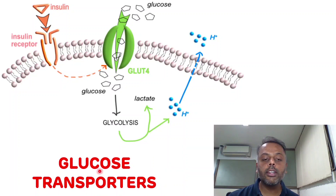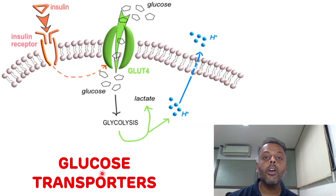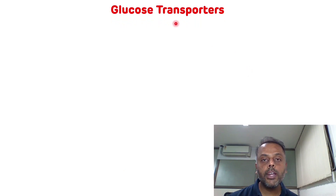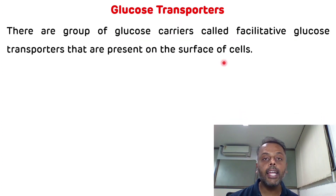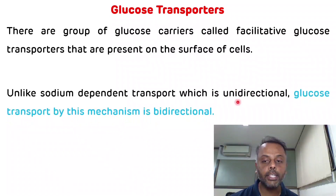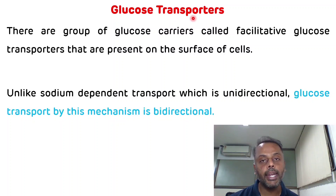Today we will discuss the definition of glucose transporters, their characteristics, and various examples along with a PG multiple choice question. Glucose transporters are the group of glucose carriers present on the surface of cells. Unlike sodium-dependent transport, which is unidirectional, glucose transport by glucose transporters is bidirectional.